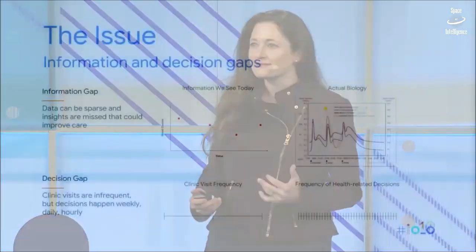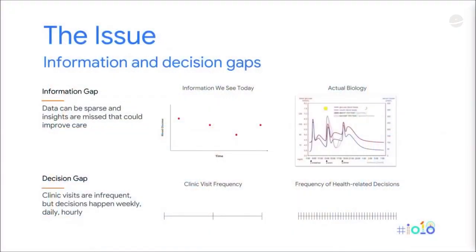People can have problems with their heart, kidneys, and peripheral neuropathy — you heard about diabetic retinopathy. This is the type of disease we need to get ahead of, but we have two main issues to address. The first is an information gap. Even the most adherent patient with diabetes would check their blood sugar only four times a day.